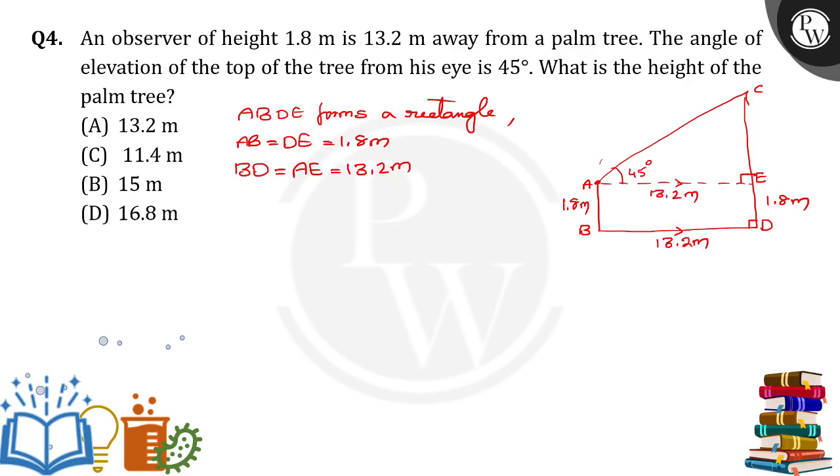So now we have to find CE first. We have to find the length of CE. So let's take the triangle. In triangle AEC, angle AEC is equal to 90 degrees.